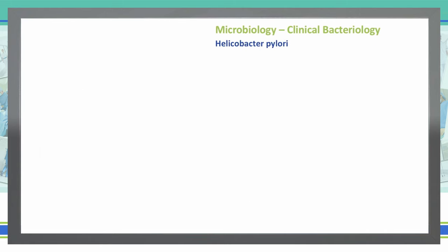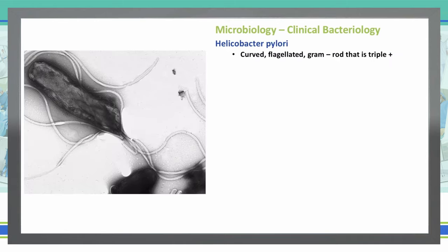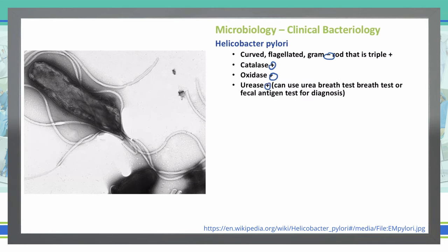Let's continue on and discuss Helicobacter pylori. H. pylori is a curved, flagellated gram-negative rod that is triple positive. So what is triple positive? It is triple positive for catalase, it is positive for oxidase, and it is positive for urease. So all three of these are positive with H. pylori.